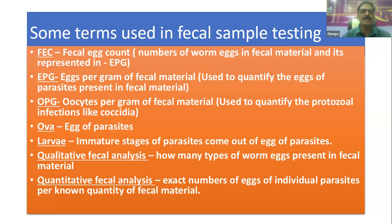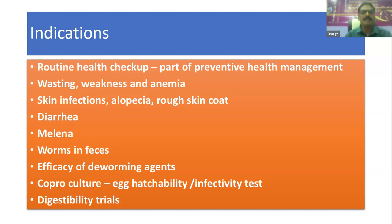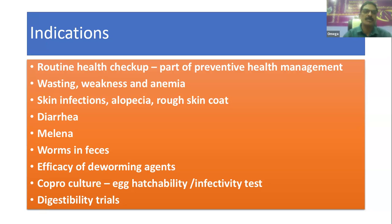Indications are the most important part — determining when we want to perform fecal sample examination. Generally many farmers do routine health checkups as part of preventive health management, giving dewormers every 2 to 2.5 months. Another indication is when animals are showing symptoms of weakness, wasting, and anemia. Third is skin infection, alopecia, rough hair coat. Then whenever there is diarrhea, melena, or worms in feces. Also for testing the efficacy of deworming agents, coproculture, egg hatchability, and infectivity tests. And finally for academic digestibility trials — determining whether the feed given to animals is being properly digested.